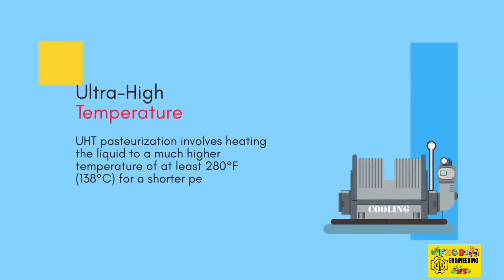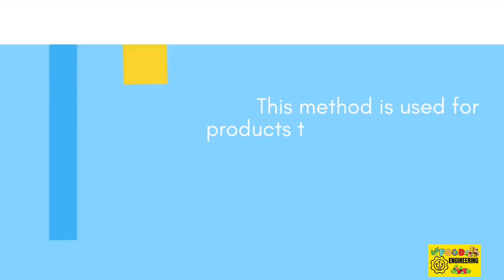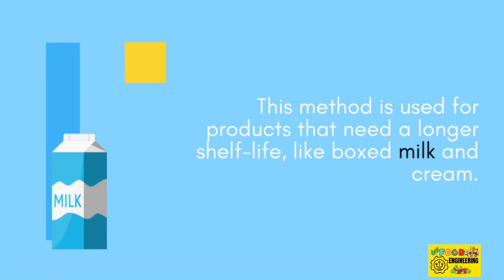Ultra High Temperature (UHT). UHT pasteurization involves heating the liquid to a much higher temperature of at least 280 degrees Fahrenheit (138 degrees Celsius) for a shorter period of time, usually 2 to 4 seconds. This method is used for products that need a longer shelf life, like boxed milk and cream.